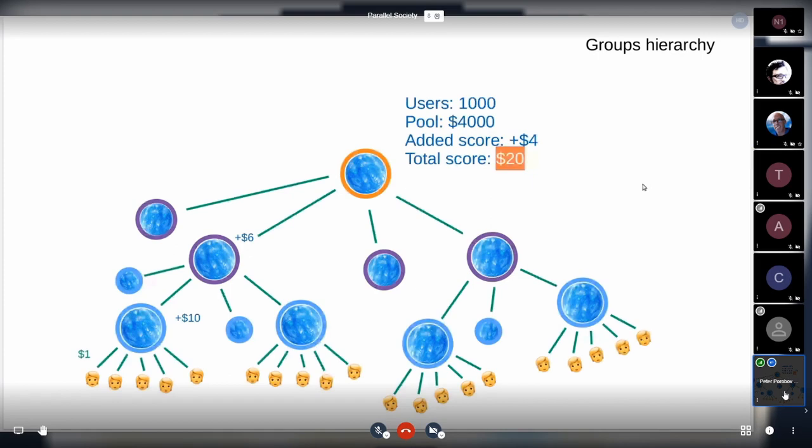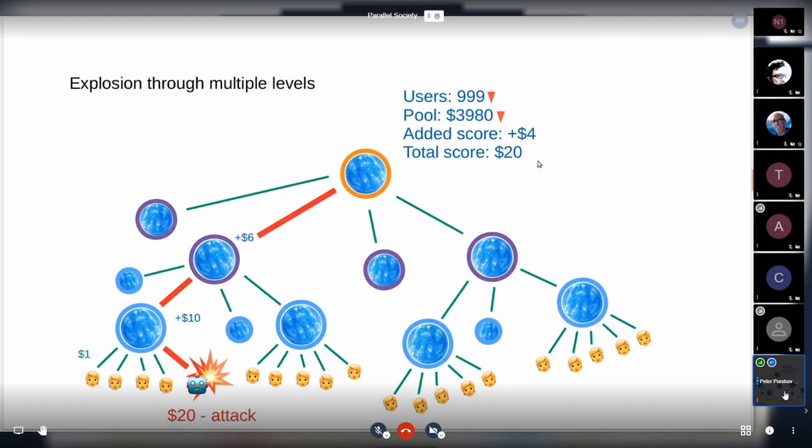This is how explosion works in this setup. If someone decides to attack or explode, this person will gather all the added scores through the path of explosion. This user selects the top group as a target because it gives the maximum score.